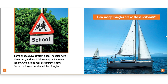Some shapes have straight sides. Triangles have 3 straight sides. All sides may be the same length or the sides may be different lengths. Some road signs are shaped like triangles. How many triangles are on these sailboats?